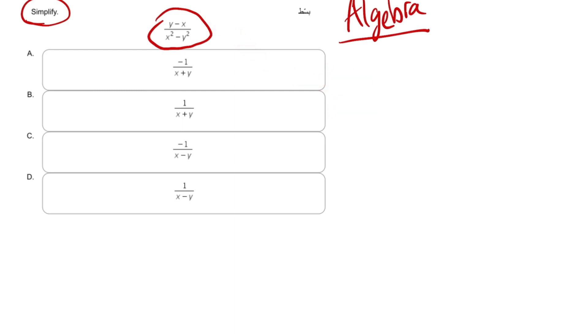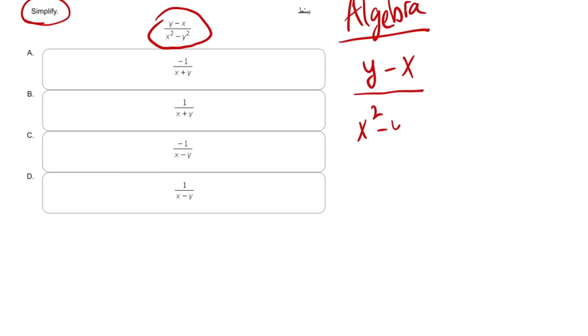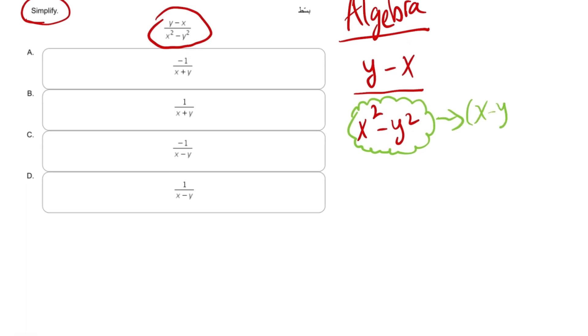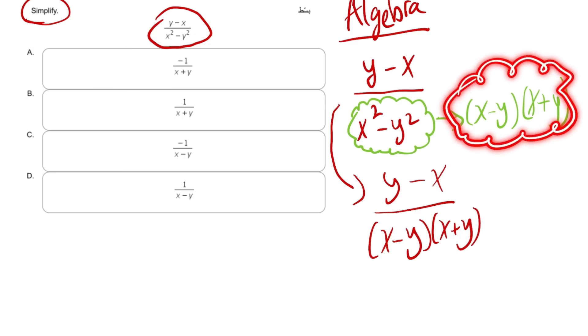Let's write the entire expression from the beginning. We're going to write it over here. We have y minus x over x square minus y square. Now the first thing that is apparent, this is the difference of two squares. So I can write it in the form which is x minus y into x plus y. Keep this in mind. This is a small trick which is the difference of two squares.